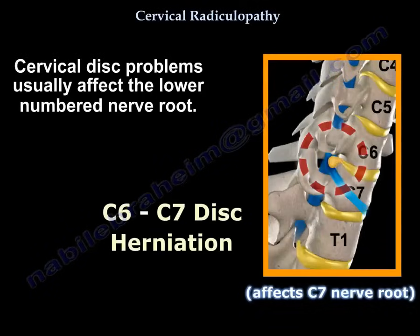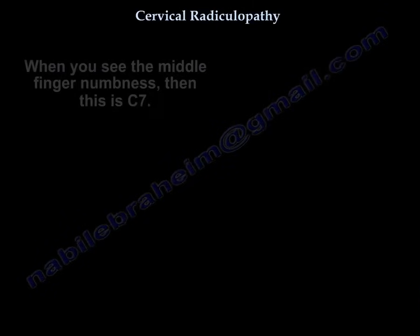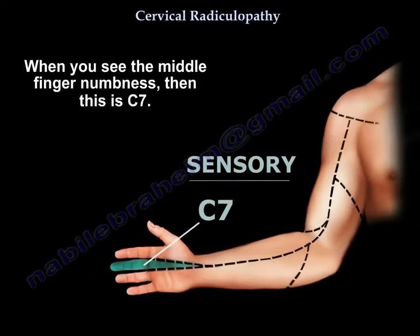Cervical disc problems usually affect the lower numbered nerve root. For example, a C6-C7 herniation will affect the C7 nerve root. When you see middle finger numbness, that indicates C7.